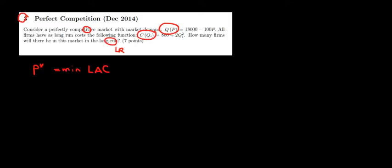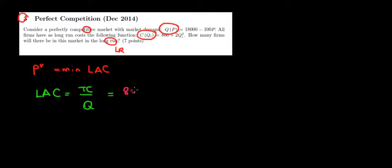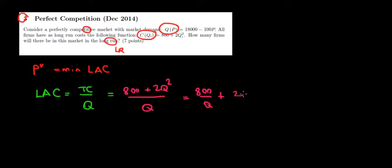We can find the long-run average cost function for that firm. The long-run average cost is simply the total cost divided by quantity, which gives us: 800 plus 2Q squared, all divided by Q. This simplifies to 800 divided by Q plus 2Q. This is the long-run average cost curve.